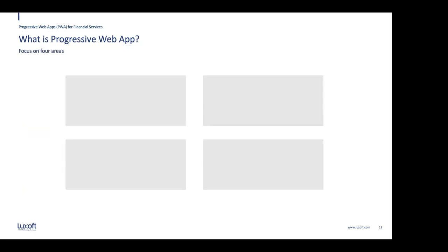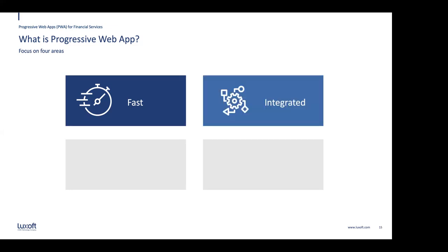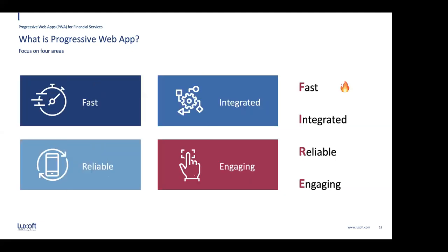To improve the quality of the web app, we have to focus on four areas. First is speed — make sure the app is fast. Second is integrated — making the experience more integrated with no difference from a native app. Third is reliable — ensure it works reliably. And the last is engaging. So: Fast, Integrated, Reliable, and Engaging — FIRE.